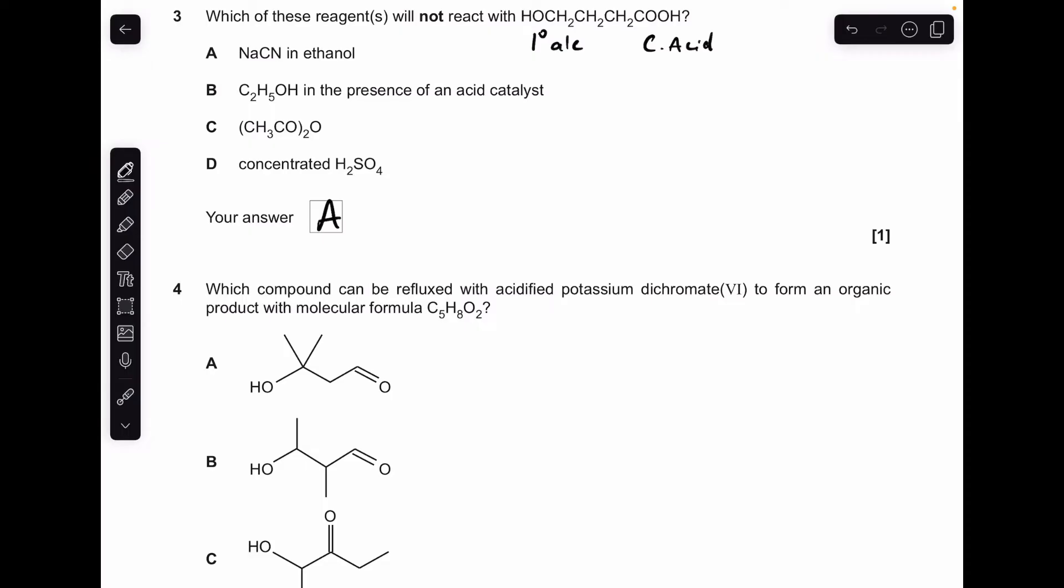But I'll just go through the others as well. Ethanol in presence of an acid catalyst—that's the esterification reaction, so that can react with the carboxylic acid part. The acid anhydride in C, that's also an esterification reaction. That would react with the alcohol part. And D, concentrated sulfuric acid, is going to dehydrate the alcohol part so it can react.